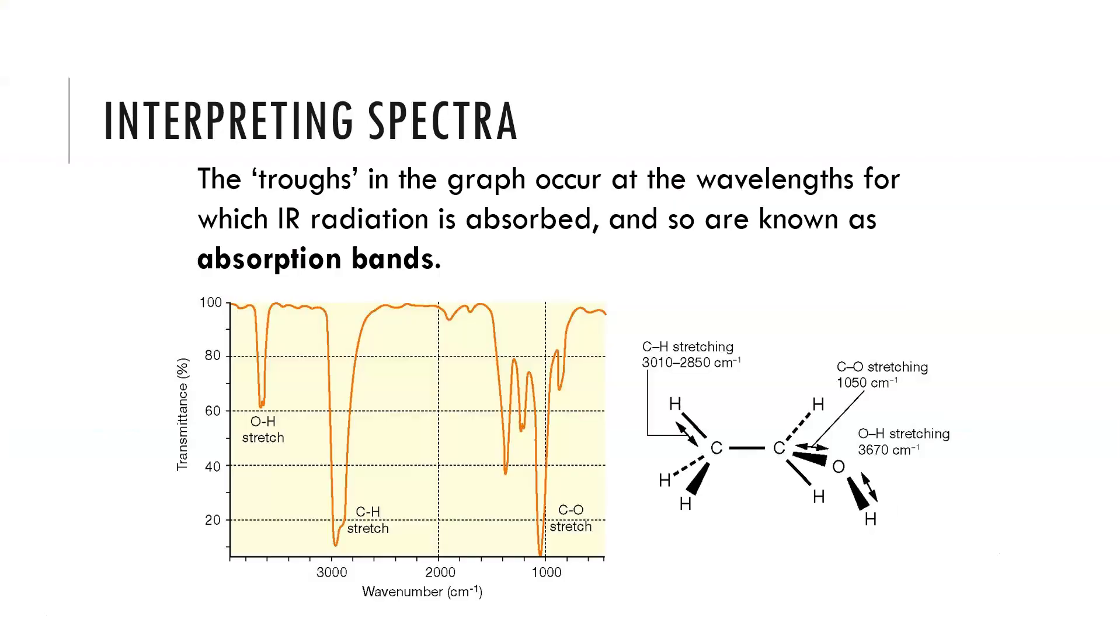The troughs in the graph occur at the wavelengths for which IR radiation is absorbed and are known as absorption bands. The units that we see this being reported in are wave numbers, and we do have to give this unit when we are reporting the frequency that we see. These are wave numbers, which is centimeters to the negative one.